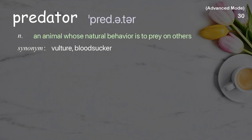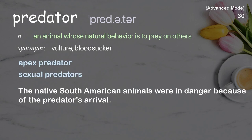Predator: An animal whose natural behavior is to prey on others. Examples: Apex predator. Sexual predators. The native South American animals were in danger because of the predator's arrival.